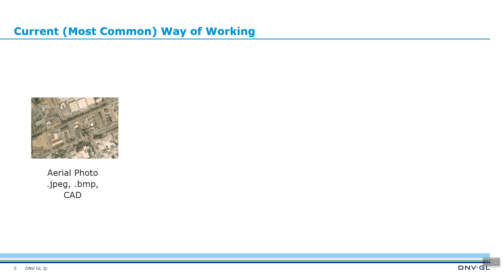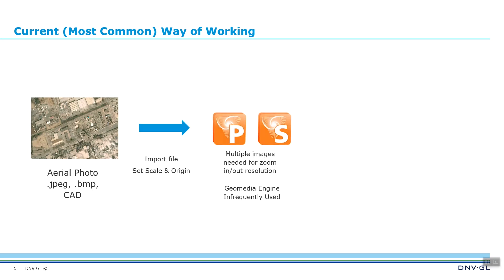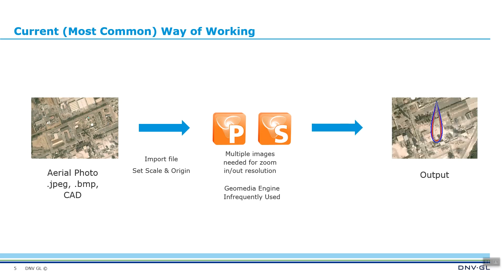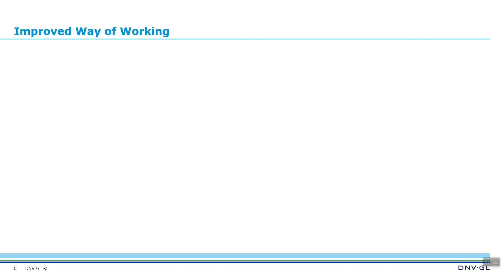The current and most common way of working is to take some sort of aerial photo — whether it be a JPEG, a bitmap, or some other graphical file format — import that file into FAST or SAFETTI, and set the scale and origin. If you want to zoom in and out, you will need multiple images, which can be an inconvenient process. Then you can send that output to FAST or SAFETTI and see the cloud footprint or other result on the map.